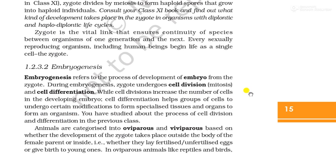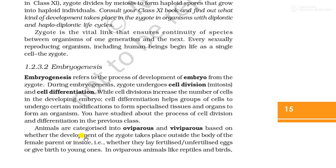We are learning from earlier classes that first of all it is a single cell — the zygote — which develops. You have studied the process of cell division and differentiation in previous classes. Now, animals are categorized into oviparous and viviparous based on whether the development of the zygote takes place outside or inside the body of the female parent.